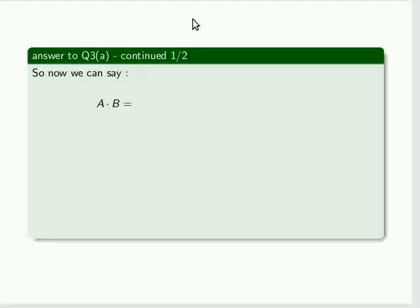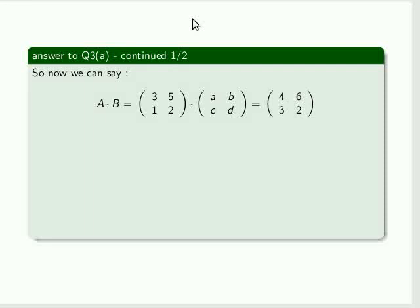So now we can say that A by B is equal to (3, 5, 1, 2) by (a, b, c, d). And of course we've been given the answer as (4, 6, 3, 2).